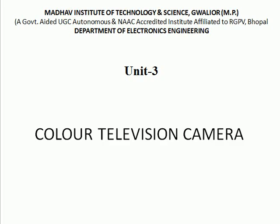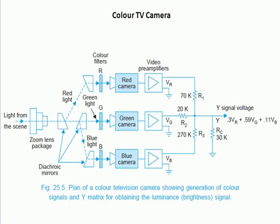Hello everybody, today we are discussing the topic of color television camera, Unit 3. This is the diagram of a color television camera, showing the generation of color signal and Y matrix for obtaining the luminance brightening signals.